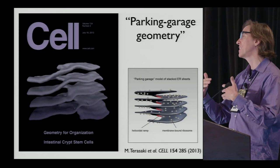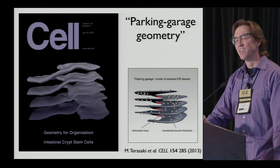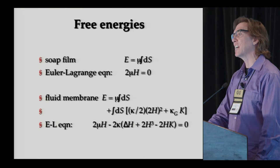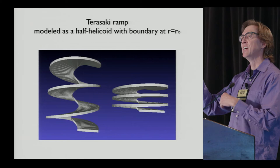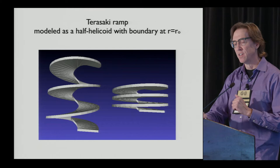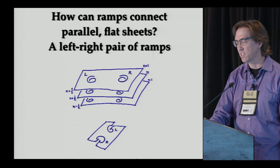So this got published two and a half years ago and made the cover of Cell, which is actually a big deal — though I'm a physicist, I didn't really know that. They dubbed it the parking garage model, named after those helical ramps you find at airport parking garages. Without going into the mathematics, we can show these are solutions of the elastic equations that describe a fluid membrane. You could take a helicoid — which is a minimal surface — and it actually solves that equation. By taking the center out of the helicoid, you can construct one of these helical ramps.